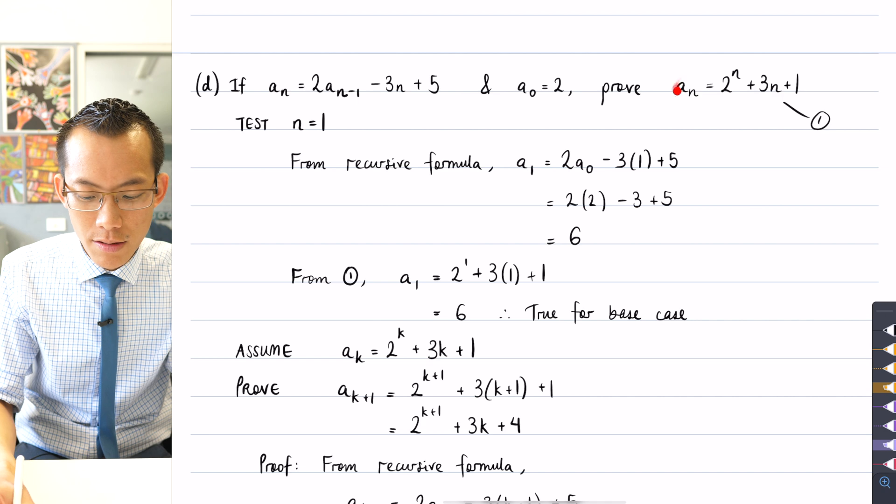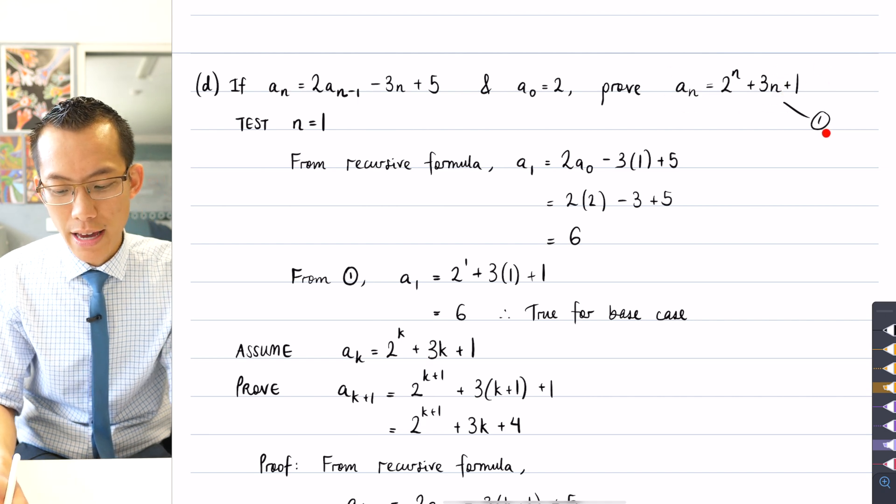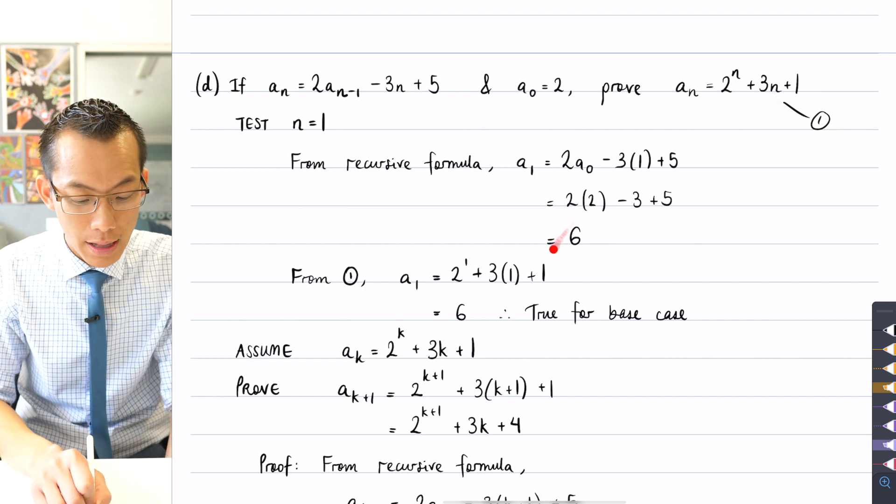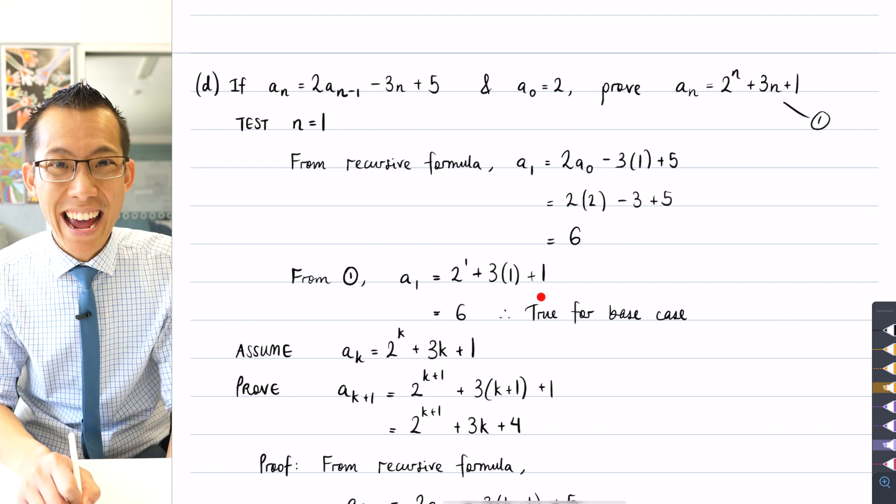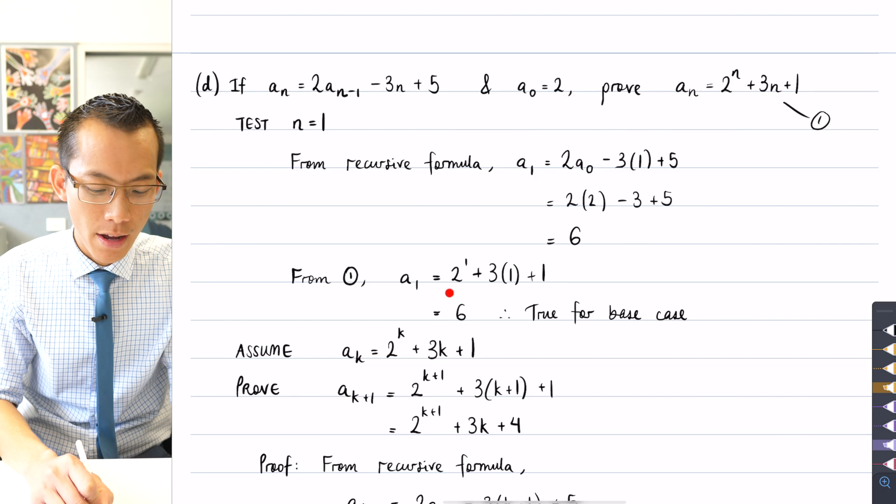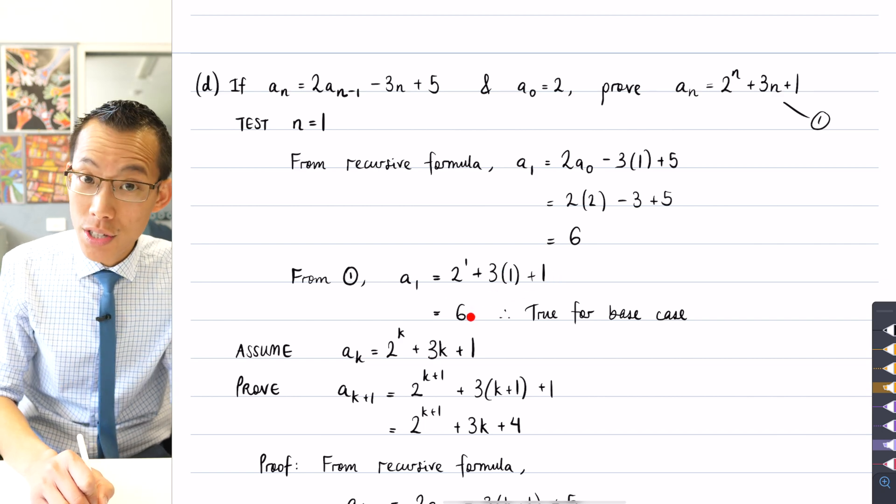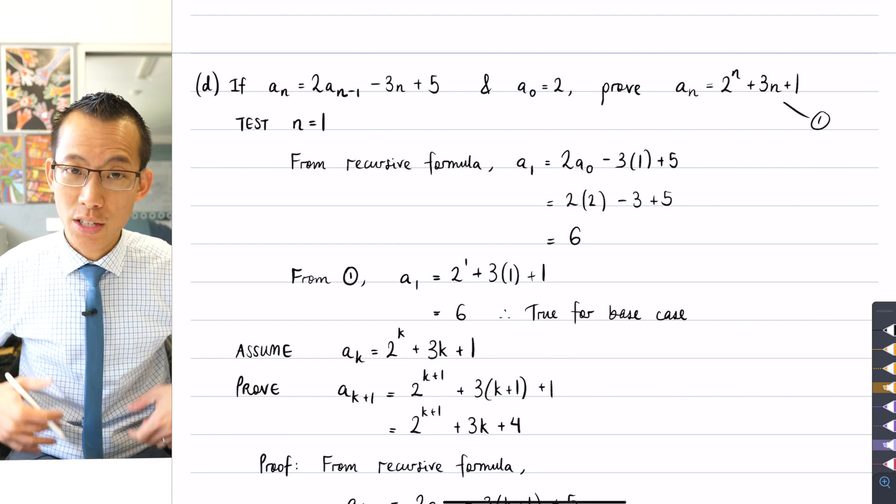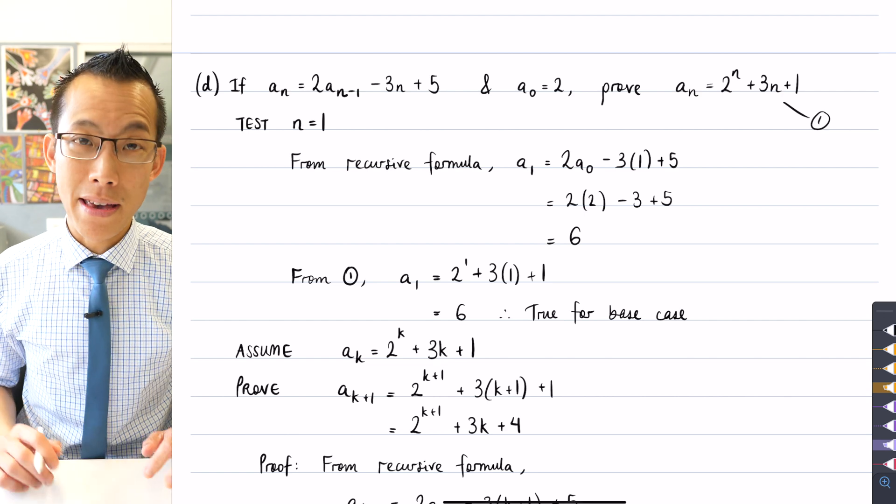Now you can see this is the result I'm trying to prove. So what I do is I label it, and from this particular formula, let's see what happens if I put in 1. N equals 1, what do I get? I get 2 to the 1 plus 3 times 1 plus 1, which is 6, the same thing that the recursive formula told me. So that's a really promising sign. I've got my base case; it works.